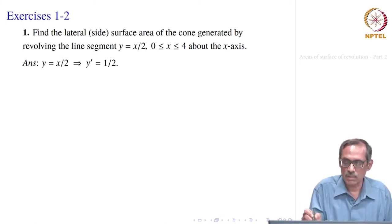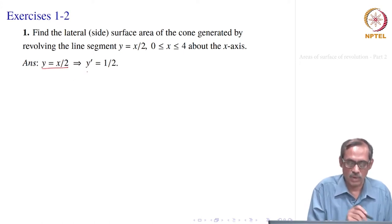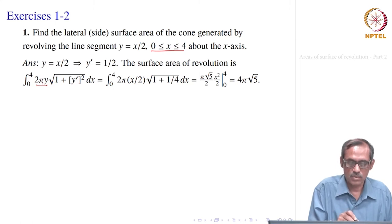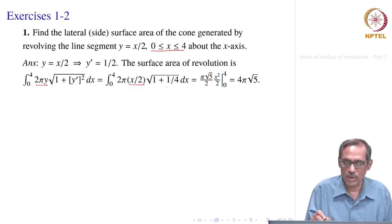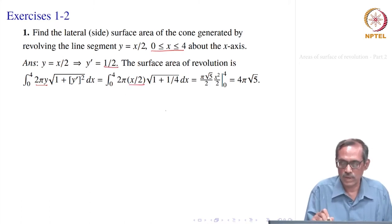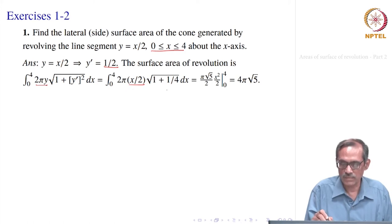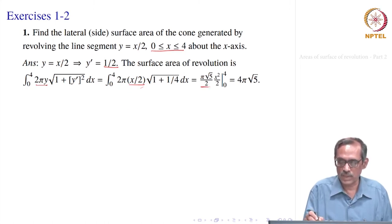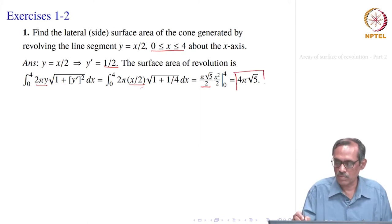We want to find the lateral surface area of the cone generated by revolving the line segment y = x/2, where x varies between 0 and 4, about the x-axis. Since y is already given as a function of x, we differentiate: y′ = 1/2. So the surface area is ∫₀⁴ 2π·y·√(1 + y′²) dx = ∫₀⁴ 2π·(x/2)·√(1 + 1/4) dx.